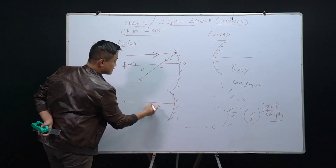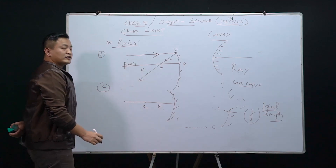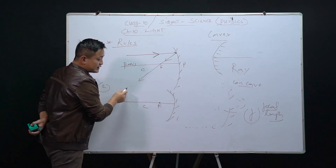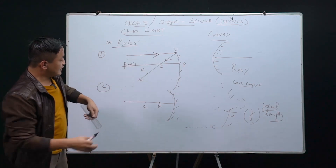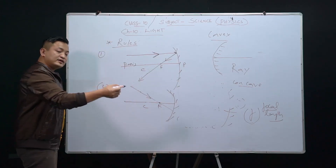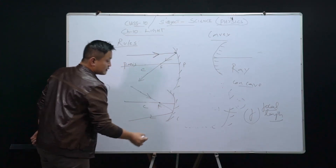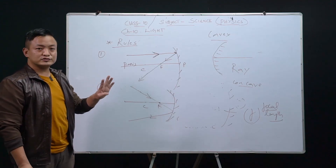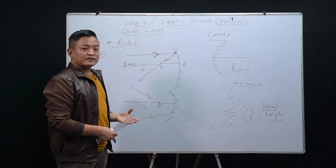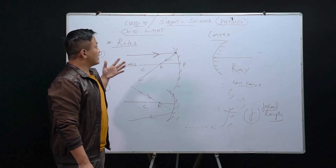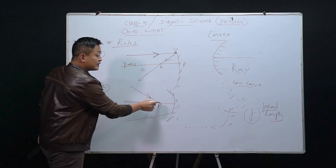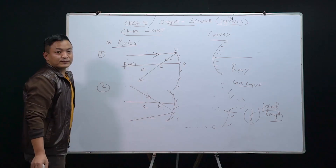Rule number two: a ray of light can come in any direction. If a ray of light passes through the principal focus before hitting the mirror, then after reflection it will become parallel to the principal axis. So rules one and two are opposites of each other — parallel becomes through-focus, and through-focus becomes parallel.